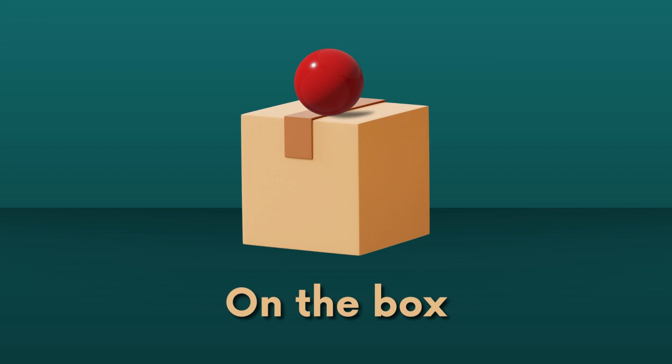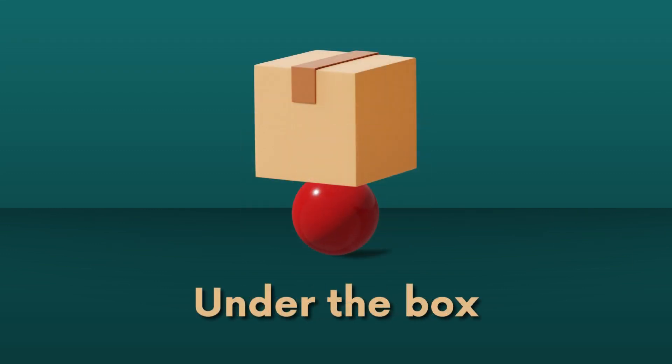'On' is used to describe a location that has a surface or a position above something else. For example, 'the ball is on the box' means that the ball is located on top of the box. The preposition 'under' indicates that an object is positioned beneath or below another object. For example, 'the ball is under the box' means that the ball is located below the box.